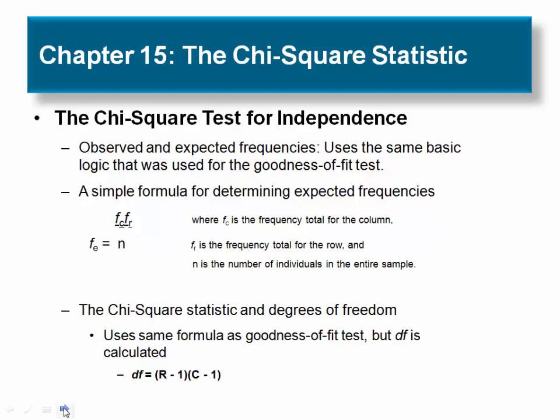Finally, for the test of independence, we compute degrees of freedom using the formula df equals (R minus 1) times (C minus 1), where R is the number of data rows and C is the number of data columns. This excludes the row and column totals you computed.